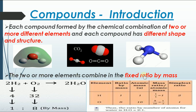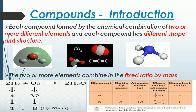The two or more elements combine in a fixed ratio by mass. There are two important ratios to understand: one we call atomic ratio, and another we call mass ratio. In H2O, how many hydrogens do we have? There are two hydrogens and only one oxygen. So the atomic ratio is 2:1 — a very simple idea.